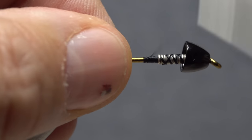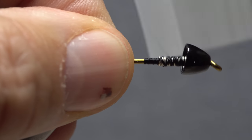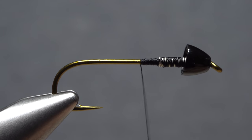Continue taking thread wraps to further lock the weight to the hook, then end with your tying thread about halfway down the shank.